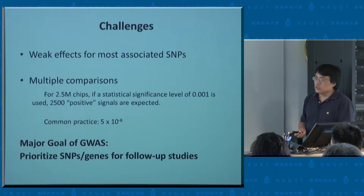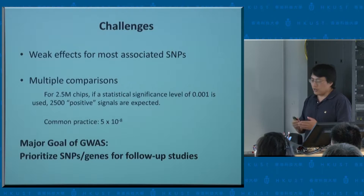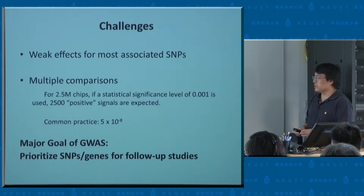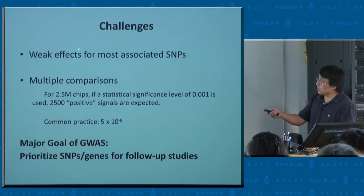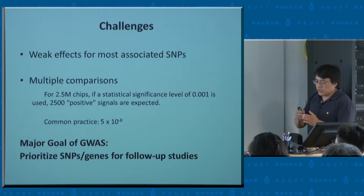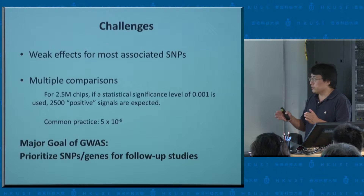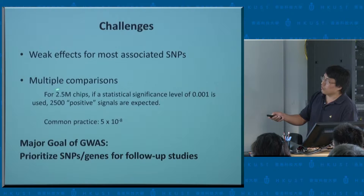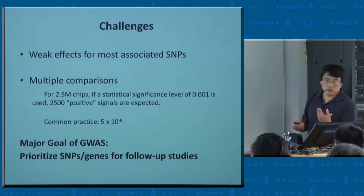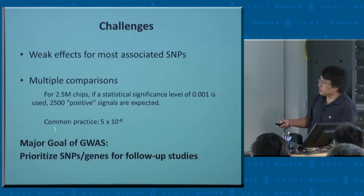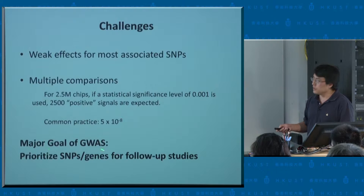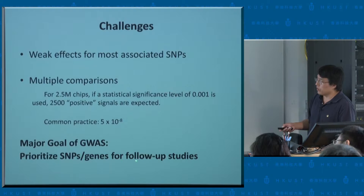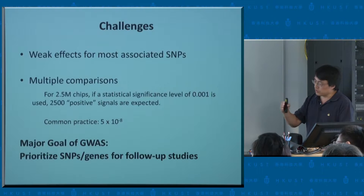The idea is to go beyond single marker-by-marker analysis — the only way to move forward is to take advantage of other information people know about. This is really where the Markov random field idea comes in. The major goal of the GWAS study is not to make definitive statements about markers associated with disease, but rather — given 2.5 million markers — to reduce that set to maybe 50 or 100 markers where people can do follow-up studies to validate. The ranking is very important. The major goal for my talk today is to prioritize SNPs for follow-up studies.